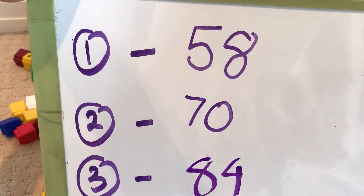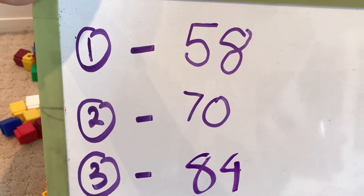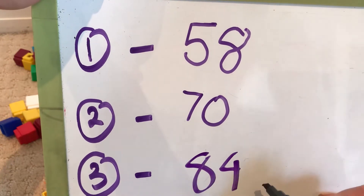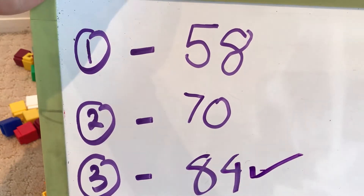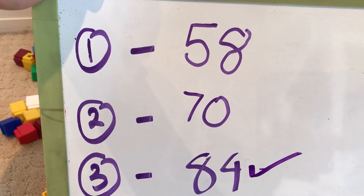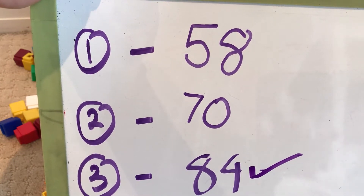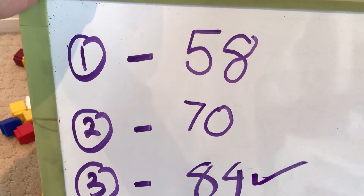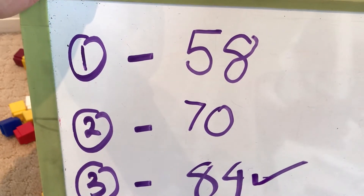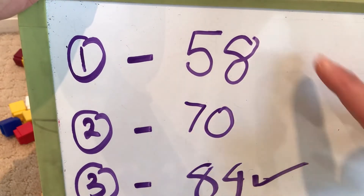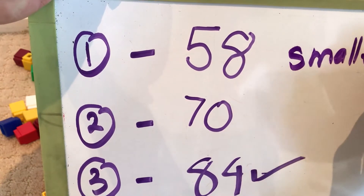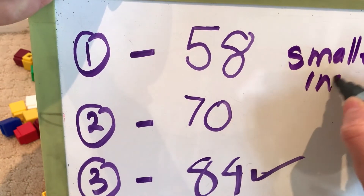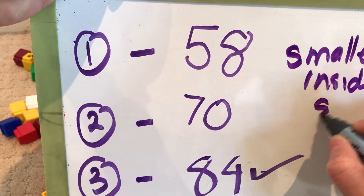8 tens and 4 more makes 84. Wow! Which container holds the most? It is container number 3 — this one has the biggest inside space. Which one has the smallest inside space? Container number 1 has the smallest inside space.